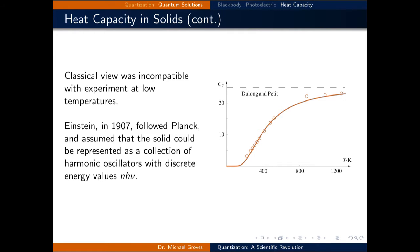This classical view was incompatible with experiment at low temperatures. In the plot on the right, the dashed line is 3R, which is the classical value of the heat capacity of a solid. The data points represent the actual heat capacity of a solid, and these deviate dramatically from the dashed line.